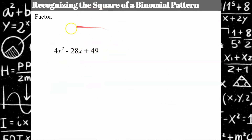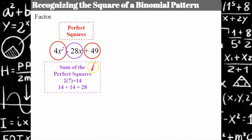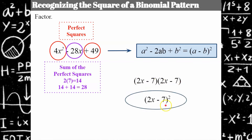Now we're going to factor this one and show you the square of the difference. 4x² is a perfect square and 49 is a perfect square. Their square roots give us 2x and 7, and 14 + 14 = 28, giving us the center term. So we can write this as a product of two binomials: (2x − 7)². The inner terms multiply to give −14x, and the outer terms give −14x, with a sum of −28x.